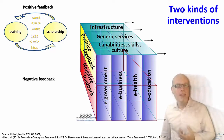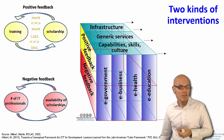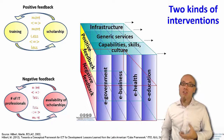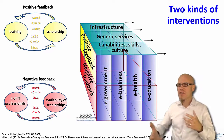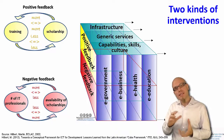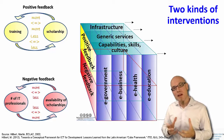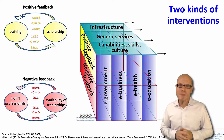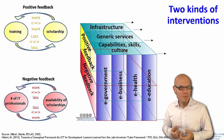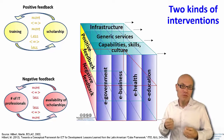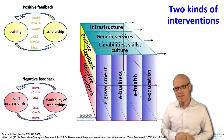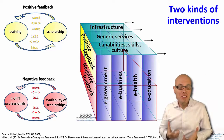An example of negative feedback: if you have a lack of IT professionals, you make available a lot of scholarships. With those scholarships you create more IT professionals, but if you have too many IT professionals it doesn't make sense to provide more scholarships, so you tune that down. Following the logic of supply and demand, you keep exactly the right amount of IT professionals — you try to keep it in the middle. So here you have two examples: one is positive feedback, a runaway dynamic of more-to-more or less-to-less, and the other is negative feedback that stabilizes the system.